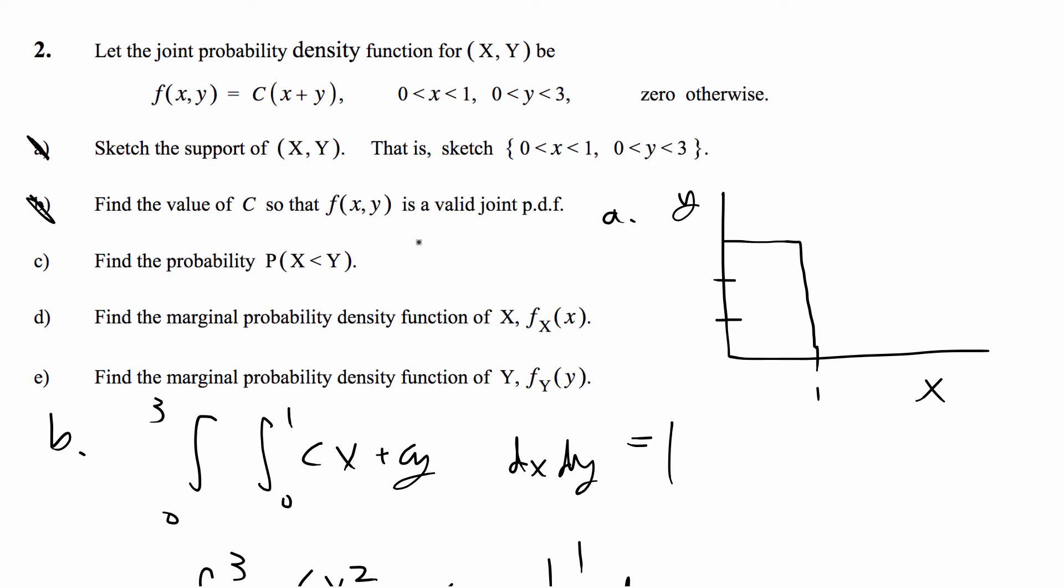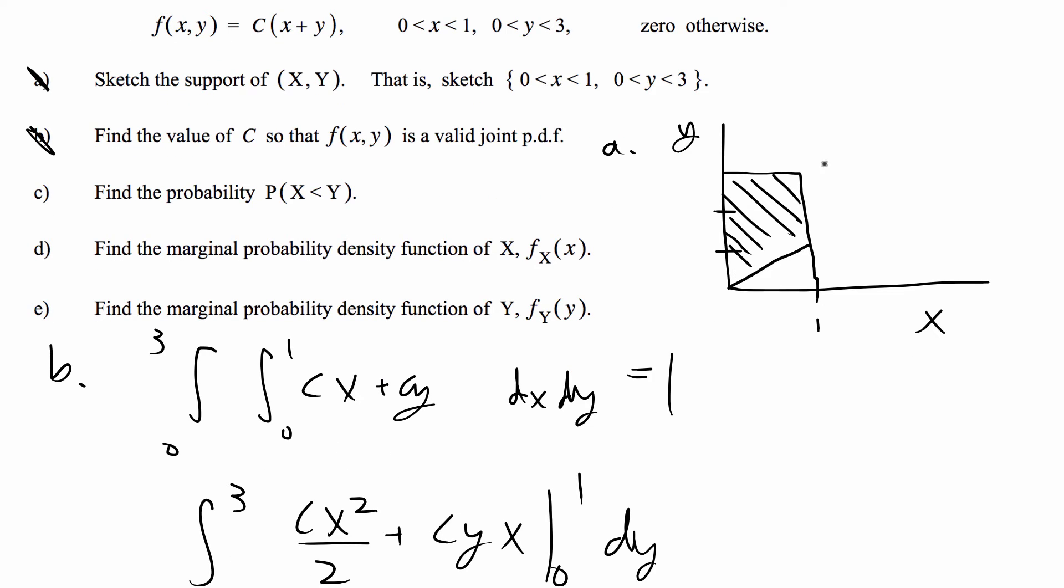We're going to draw the line X equals Y which is just from 0 to 1 and then this point is (1,1). Because this is when X is less than Y, the support is everything above this line. This whole shaded area is equal to when X is less than Y. That's going to give us a picture of what we need to integrate.